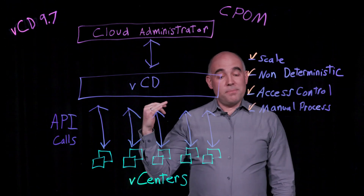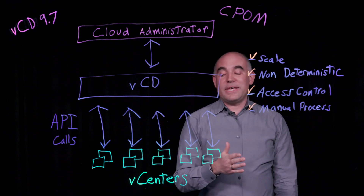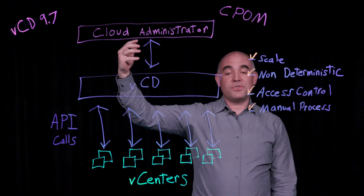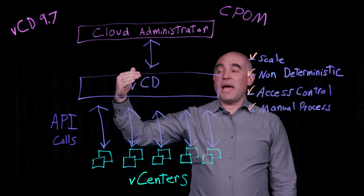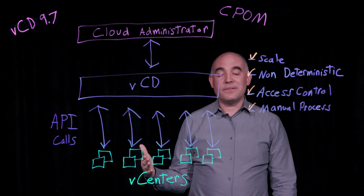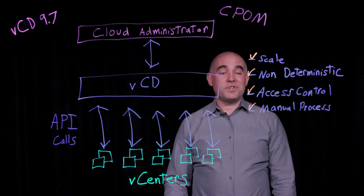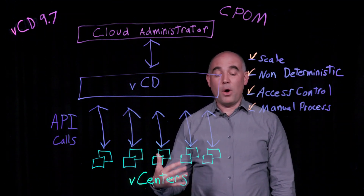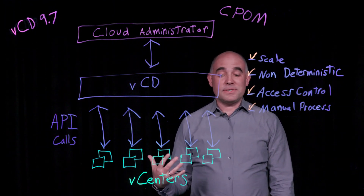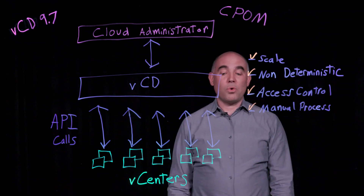VCD is also going to be able to act as a lightweight directory that will contain a listing of all of the vCenters in the environment. The cloud administrator sends an API call to VCD and VCD is going to return back all of the vCenters that are available in the environment with some basic information such as the vCenter ID, the number of hosts associated with that vCenter, its basic up-down status, and some basic statistics related to CPU, memory, and storage utilization.